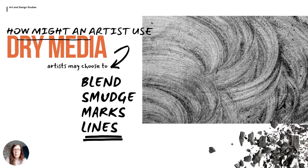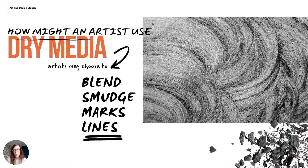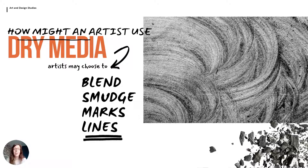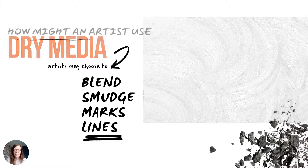Firstly, we're going to look at dry media. That might be pencil, coloured pencil, charcoal, oil pastel, chalk pastel — anything which doesn't require you to use water. If an artist is using those types of media, we think about how they might be applying it to the paper or canvas. We're thinking about things like blending, smudging, or smoothing the material. Or are they leaving visible marks — scratchy marks or lines which maybe suggest a texture? Dry media can be used in lots of different ways to create different effects.